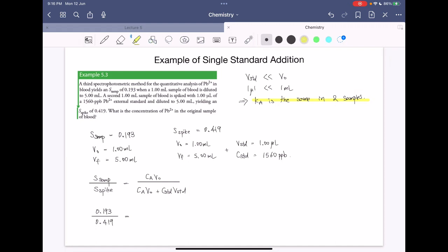We need to find the CA in the original sample. So CA times V0 will be 1 millimeter divided by CA times 1 millimeter plus CSTD is 1560 ppb.